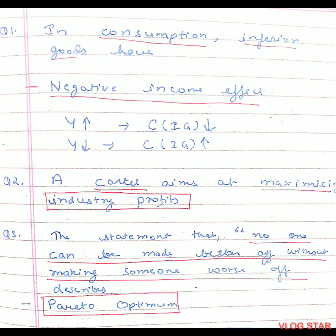Question 2. A cartel aims at maximizing industry profits. Question 3. The statement that no one can be made better off without making someone worse off describes Pareto optimality.